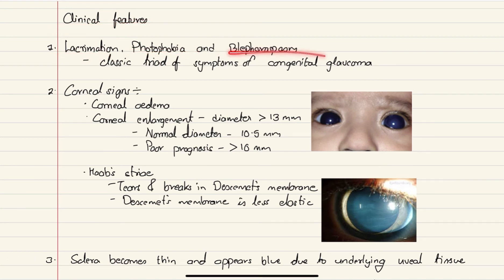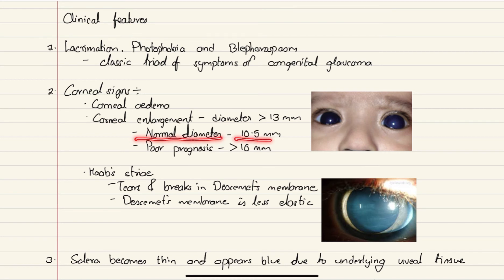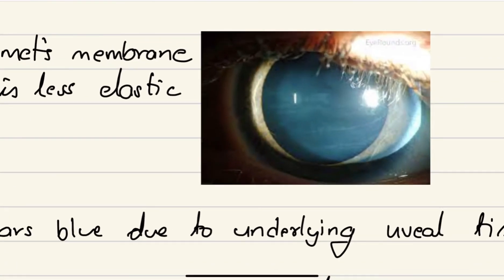The clinical features can be remembered as LPB: lacrimation, photophobia, and blepharospasm. Blepharospasm means involuntary blinking of the eyelid. These three symptoms often occur together and form the classic triad of congenital glaucoma. Under corneal signs: there can be corneal edema and corneal enlargement where the diameter can increase up to 13 mm — normal is around 10.5 mm, and prognosis is poor if greater than 16 mm. There can also be Haab's striae — tears and breaks in Descemet's membrane, which is less elastic and tears as the cornea enlarges, forming the horizontal lines visible in the picture.